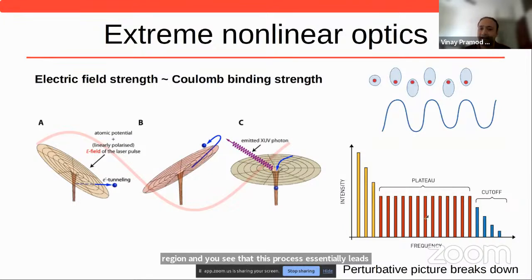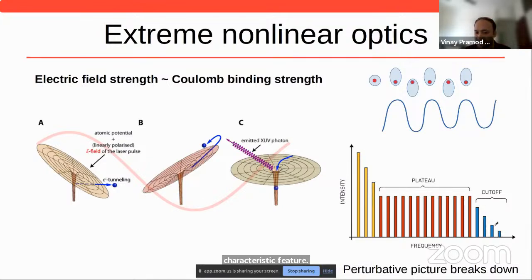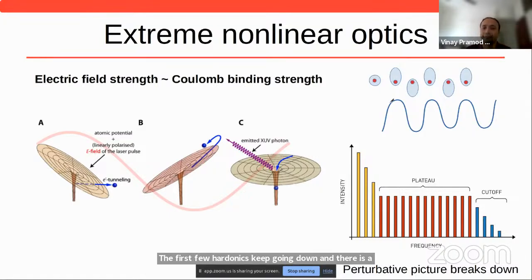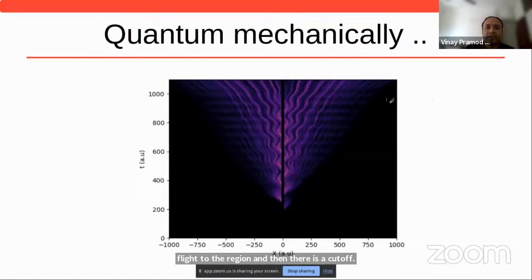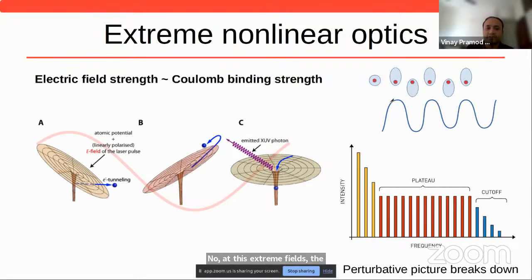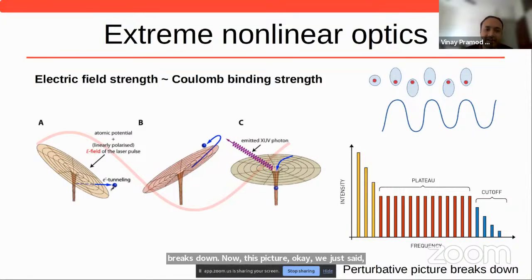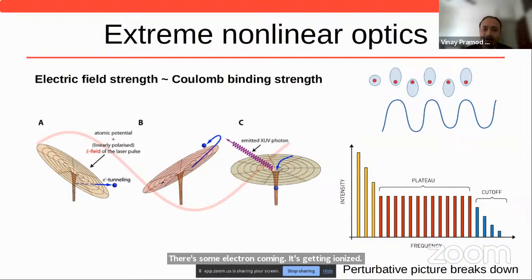This process essentially leads to emission of all these harmonics, with a characteristic feature: the first few harmonics keep going down, there is a plateau region, and then there is a cutoff. At these extreme fields, the perturbative picture breaks down. To confirm this picture of electron ionization, dynamics, and recollision, we did a quantum mechanical simulation.